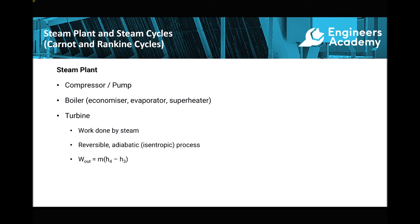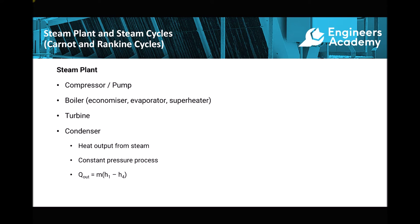The final component in our cycle is the condenser, which is used to condense the steam — removing heat from the steam to convert it back to water. The assumption is that this happens at constant pressure, so the pressure at the inlet and outlet of the condenser are equal. The heat output is calculated as the mass of steam or water passing through the condenser multiplied by the change in enthalpy through the condenser.